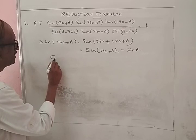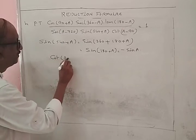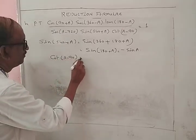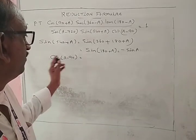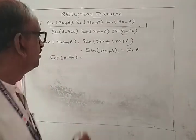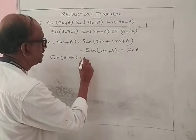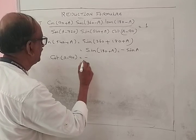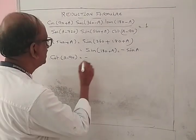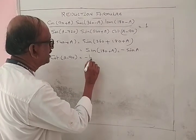cot(A - 90): from the earlier column, cot(A - 90) = minus cot(90 - A), which simplifies with a negative sign giving the result established previously.